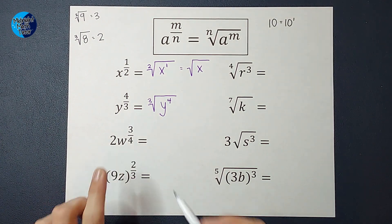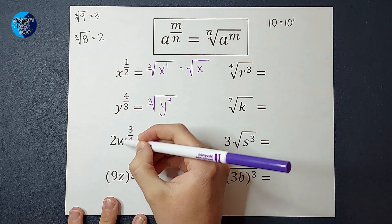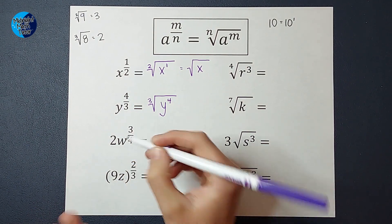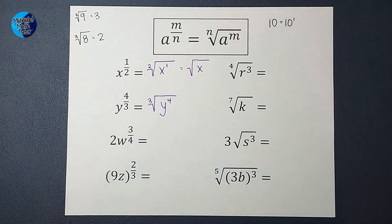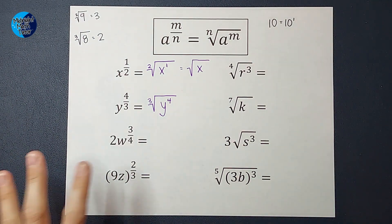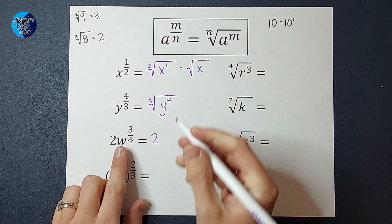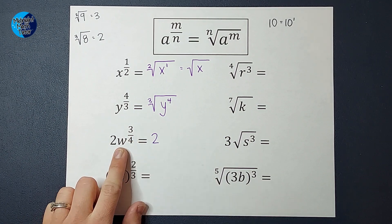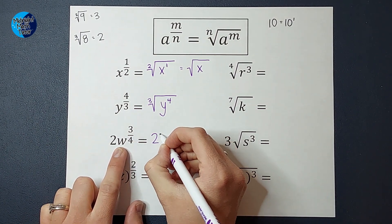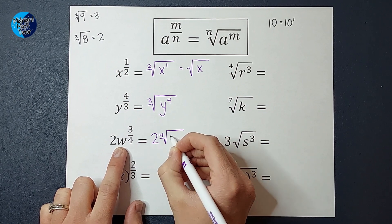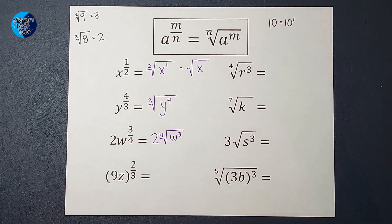All right, this one, the exponent applies to the w, not the 2. If it were to apply to the 2, it would have parentheses like this example down here. So the 2 is just kind of off by itself. So we're going to have the 2 out front, and then the exponent applies to the w. So it will end up being the fourth root of w to the third power. We feeling okay about this?